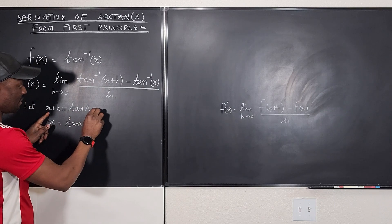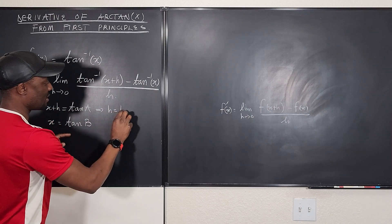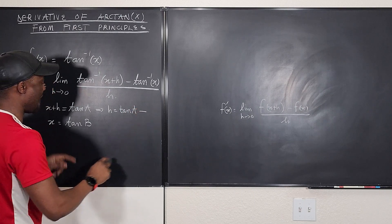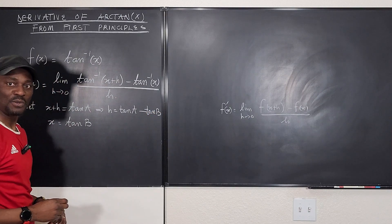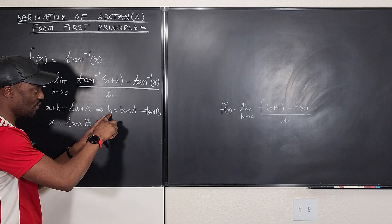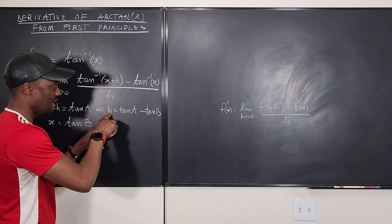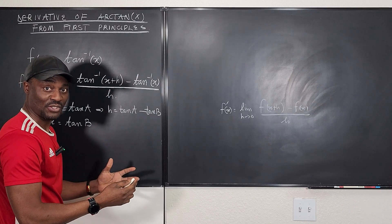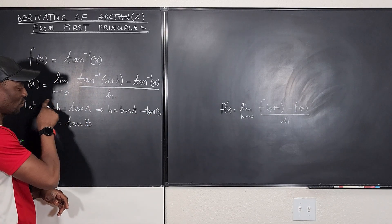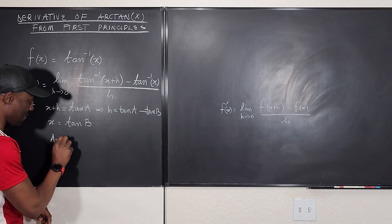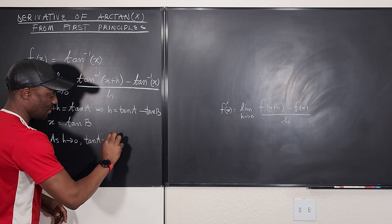This means that h will be equal to tan(a) minus x, and since x is tan(b), we can write h as tan(a) minus tan(b). Notice that as h goes to 0, tan(a) goes to tan(b), because the closer tan(a) gets to tan(b), the closer h gets to 0. So we replace the limit condition: as h goes to 0, tan(a) goes to tan(b).